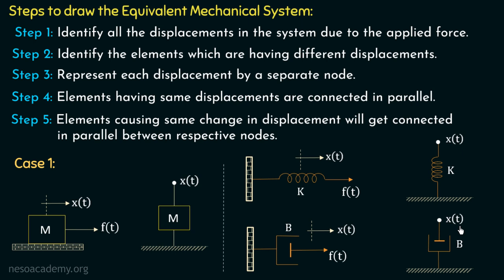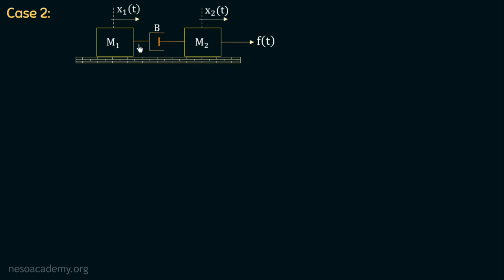We are now done with case number one and will move on to case number two. In case number two, we have a mechanical system with two masses M1 and M2 lying on a fixed surface. A force F is applied on the right-hand side, causing displacement x1(t) in mass M1 and displacement x2(t) in mass M2. A damper of constant B is connected between these two masses, so its net displacement will be x1(t) minus x2(t).